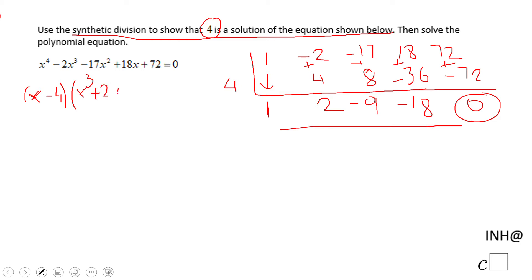That means (x - 4), be careful, times what? And now your third degree polynomial is right here: x^3 plus 2x^2 minus 9x minus 18. This is the factored form of that 4th degree polynomial equal to 0.